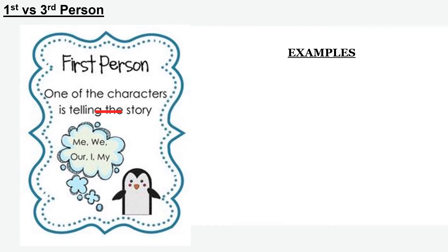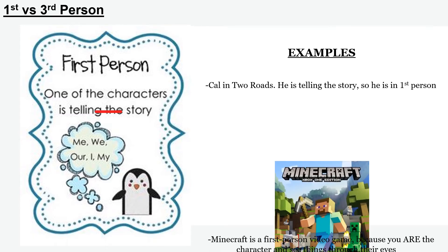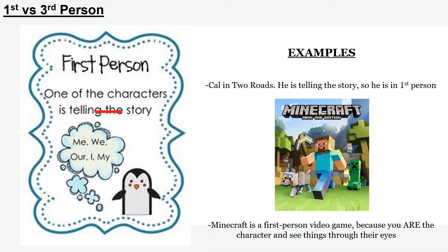First person is a character that is telling the story. An example of first person is Cal in our book Two Roads. Cal is telling the story — it's from his perspective, so he is in first person. Cal uses the words I, me, and my, which also shows us it is told in first person. To help you remember this, think about the video game Minecraft. Minecraft is a first person video game because when you play as a character, you are that character and you see things through that character's eyes and perspective.